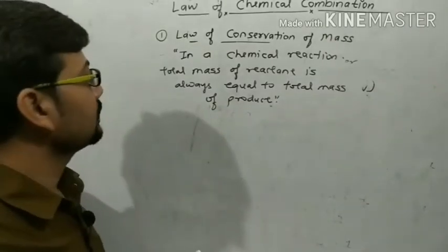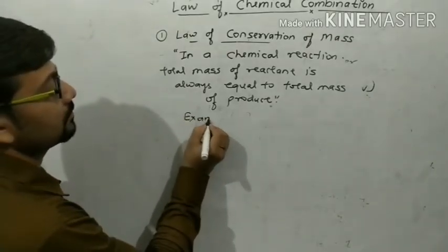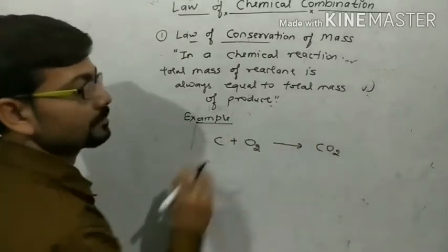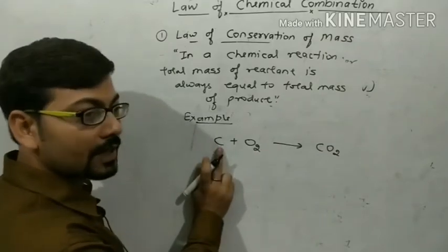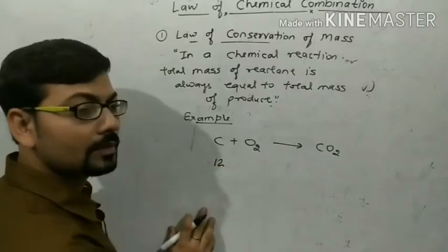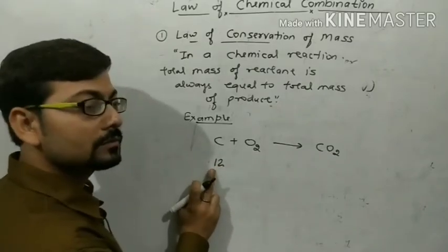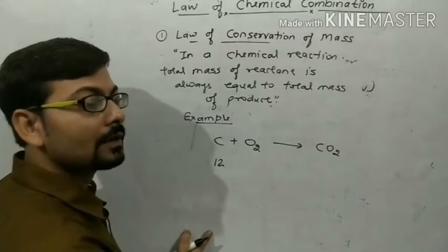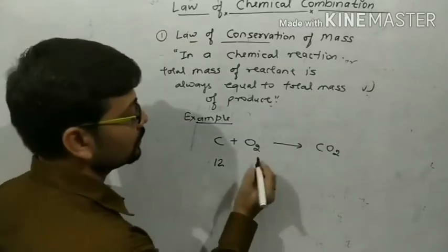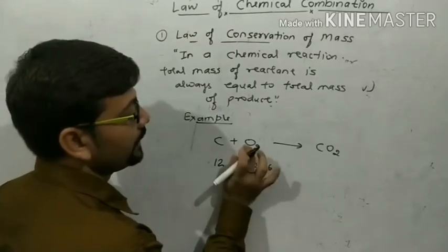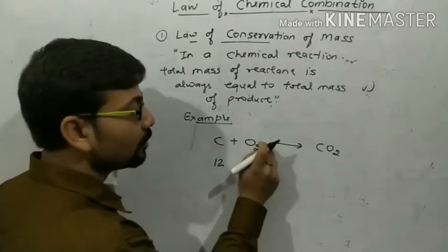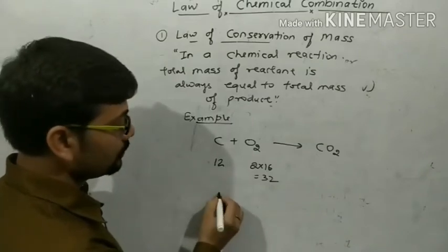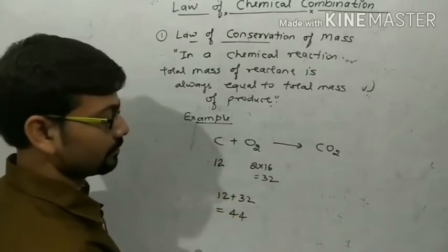Let's take an example to understand this law. Carbon reacts with oxygen to form carbon dioxide. The atomic mass of carbon is 12 and the atomic mass of one oxygen atom is 16. Since there are 2 oxygen atoms in CO₂, we multiply 2 × 16 = 32. So total mass of reactants = 12 + 32 = 44.